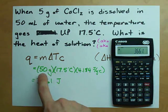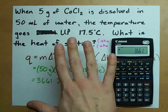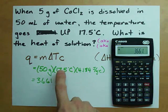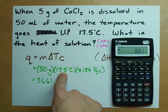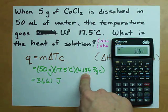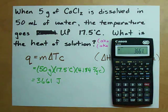Now, you might be wondering why I used 50 grams. Because it's the water that's being heated here. It's the same reason that I say the temperature of the water went up 17.5 degrees Celsius, and the heat capacity of water is 4.184 joules per gram degree Celsius.